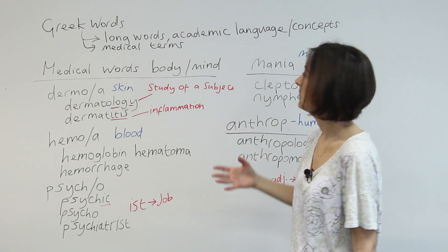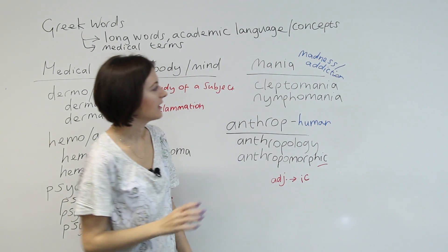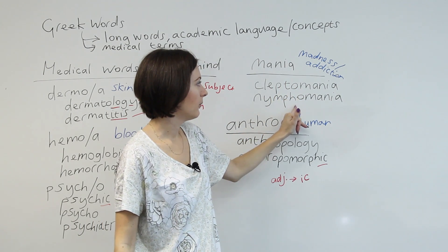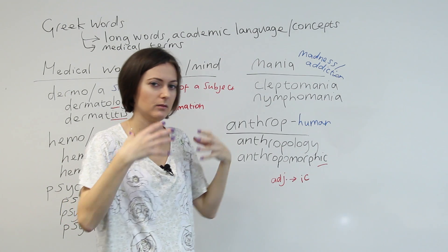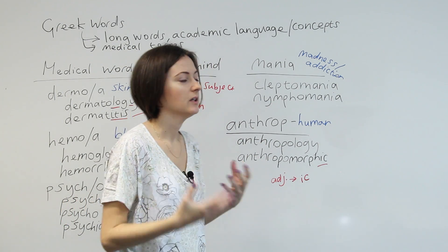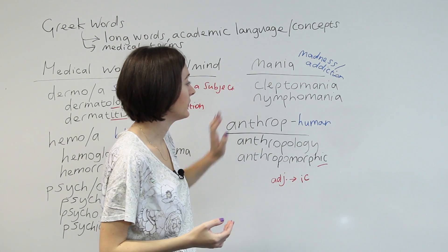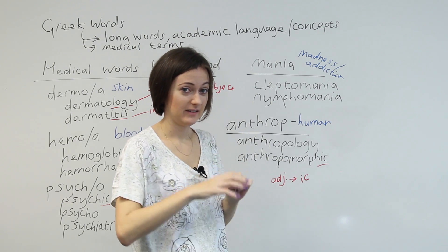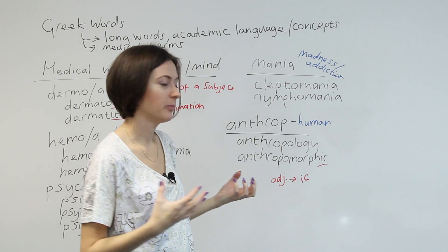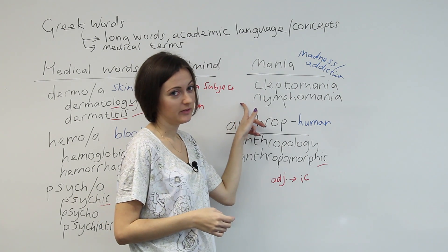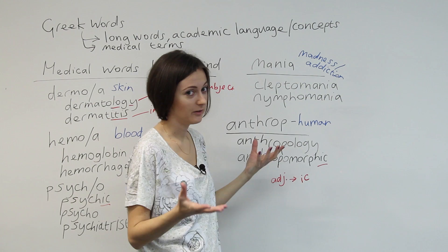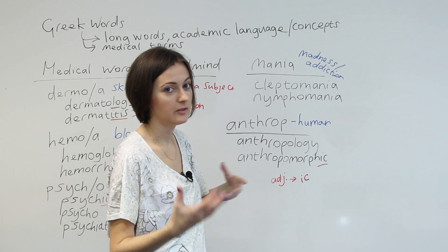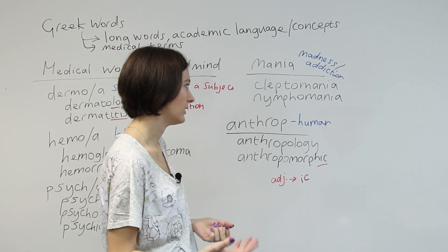Let's have a look at words with '-mania'. Mania means to be mad or addicted to something. Here are two words: kleptomania means somebody addicted to stealing things — a thief who can't help themselves from stealing. And nymphomania means somebody addicted to sex, somebody who can't help themselves. But there are many, many words with this '-mania' on the end, so if you see that, you can get a sense of what it actually means.